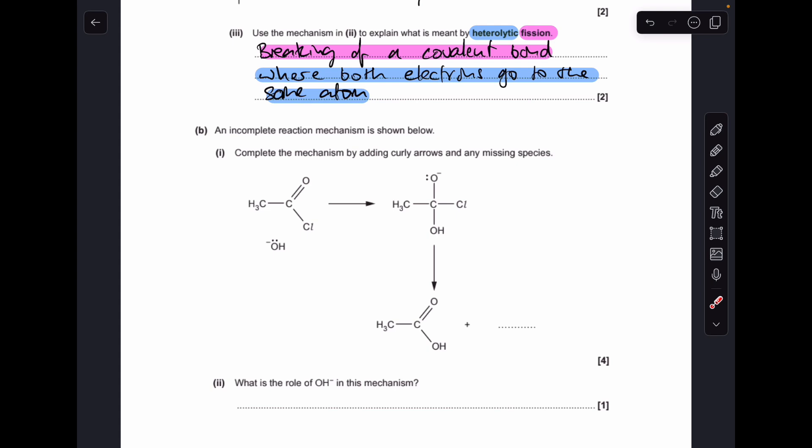So moving on to part B, you've got an incomplete mechanism. We've basically got to add the curly arrows and the missing species at the end. So if you look at what you're starting with and this intermediate here, you can see that the OH has attached itself to this carbon. So what must have happened is a curly arrow from that lone pair has gone onto that carbon. You can see that the chlorine is still attached, so there's no change here.